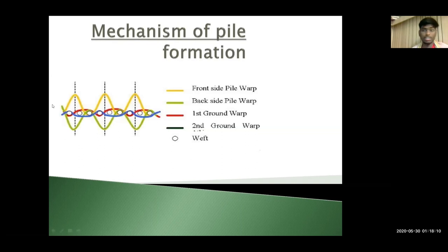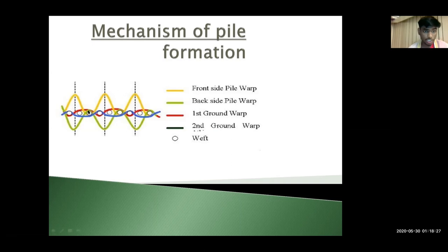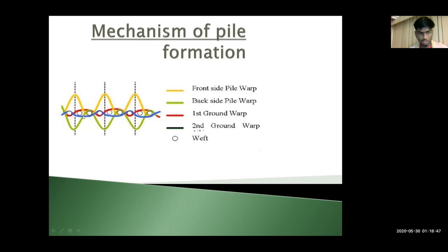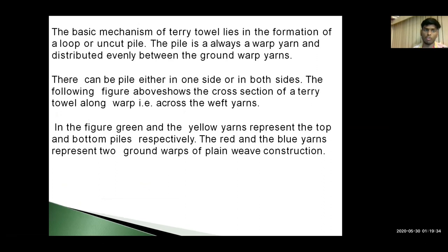Mechanism of pile formation — what is a pile? Pile is a surface effect on a fabric composed of an infinite number of loops of warp threads or weft threads. Over here, if you can see this outer boundary loop, yellow and green is the face-side pile warp — this is the bending of the yellow thread on the green thread in a cross pattern. Inside we have another loop, red and blue, with the first and second round wrap, and the weft — these tiny holes are the weft. The basic mechanism of terry towel lies in the formation of a loop of uncut pile. There can be pile on one side or on both sides with different patterns, with the cross section of a terry towel along a warp, i.e., across the weft yarns.